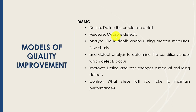In the Analyze step, you do an in-depth analysis of process measures — this is where you might bring in fishbone diagrams or flowcharts to understand the conditions contributing to defects or errors. Then you Improve by defining a test or intervention aimed at reducing defects. Finally, Control addresses what steps you will take to maintain performance once you have achieved the desired results.